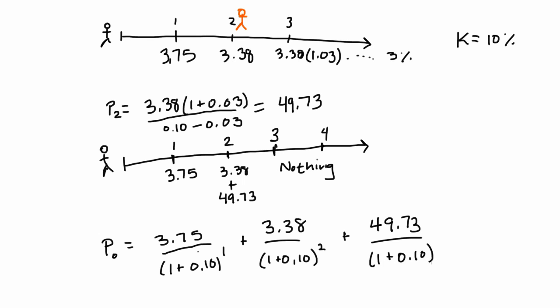We discount that once again at the 10%. But remember that we're only discounting this back two periods because that's where we were pretending to stand on our original timeline when we took the present value of the perpetuity. When you plug that all in, you get a value of this share of stock of $47.30.